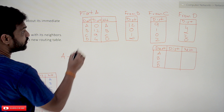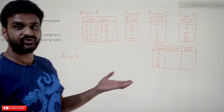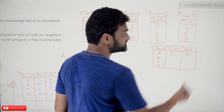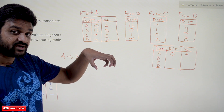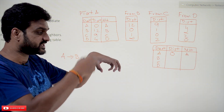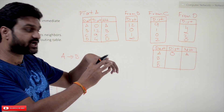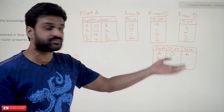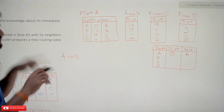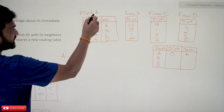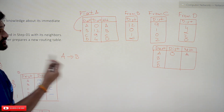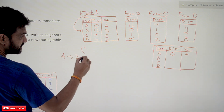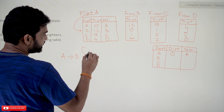A to A: is it required? A to A is again 0 — the distance is 0 and the next hop is A itself, since the packet is already at that router. Now, if the router wants to transmit data from A to B, what are the different possibilities based on the knowledge we have?